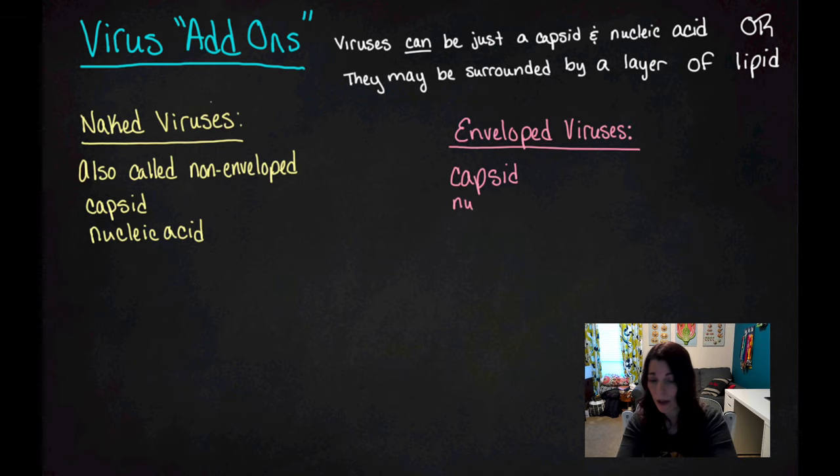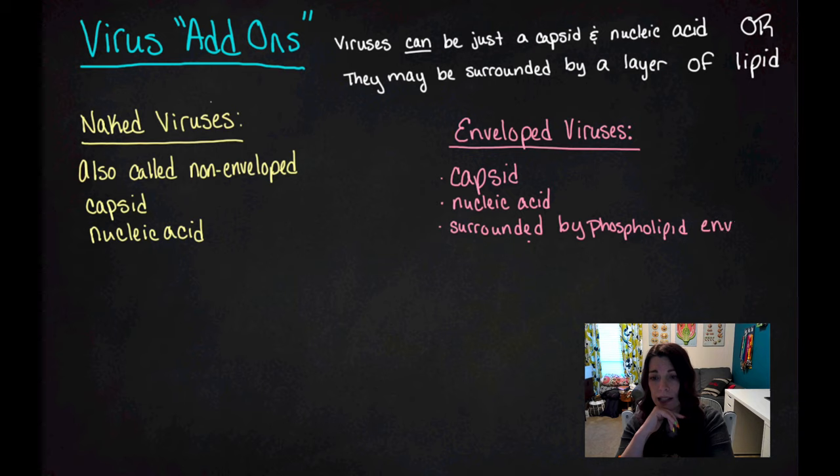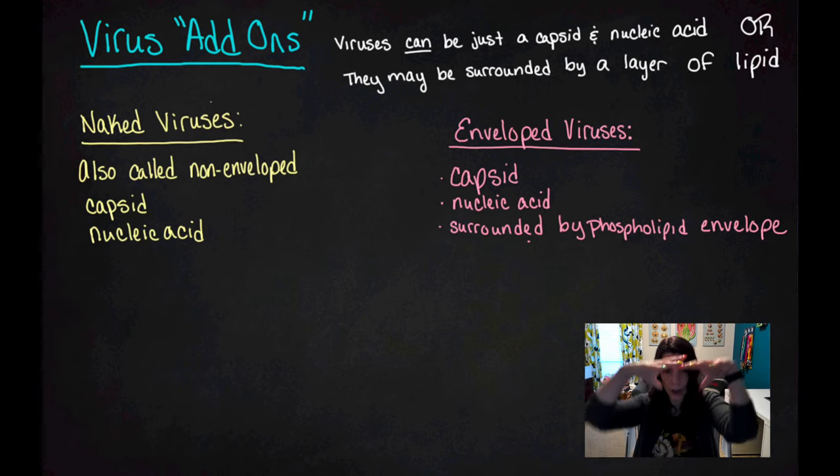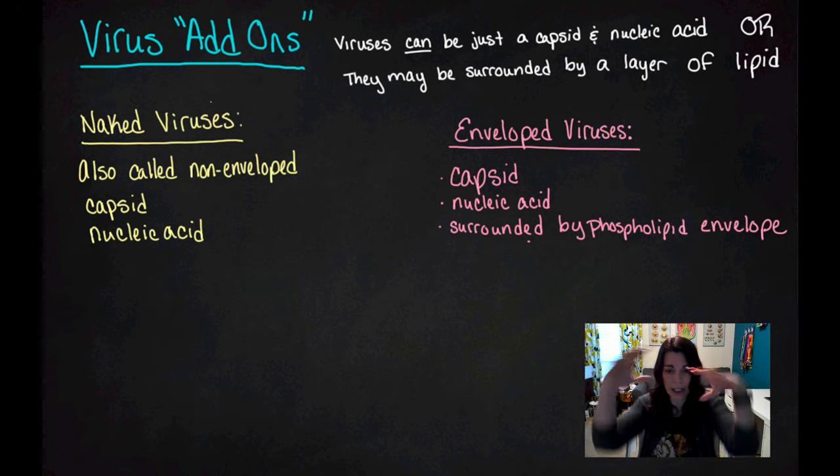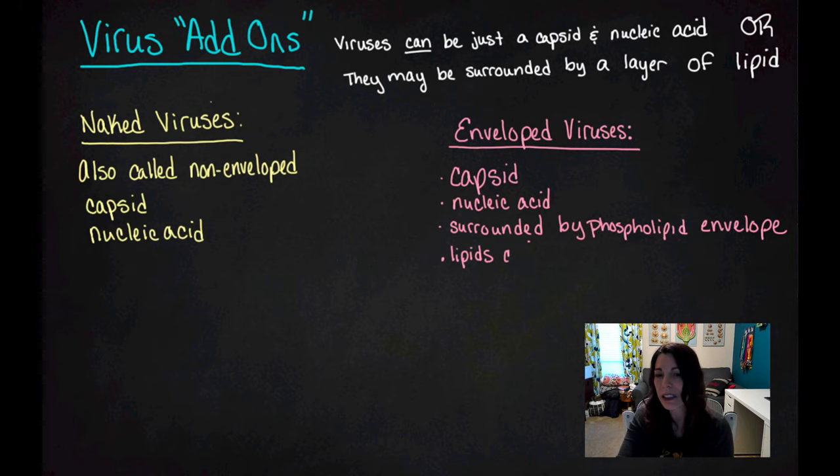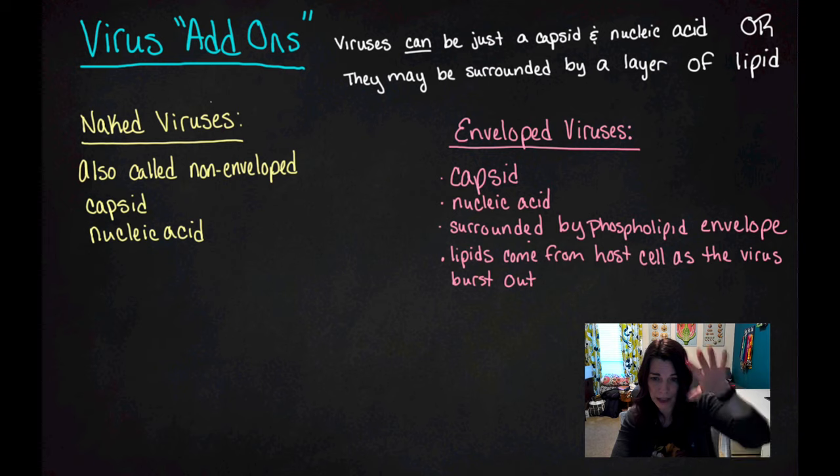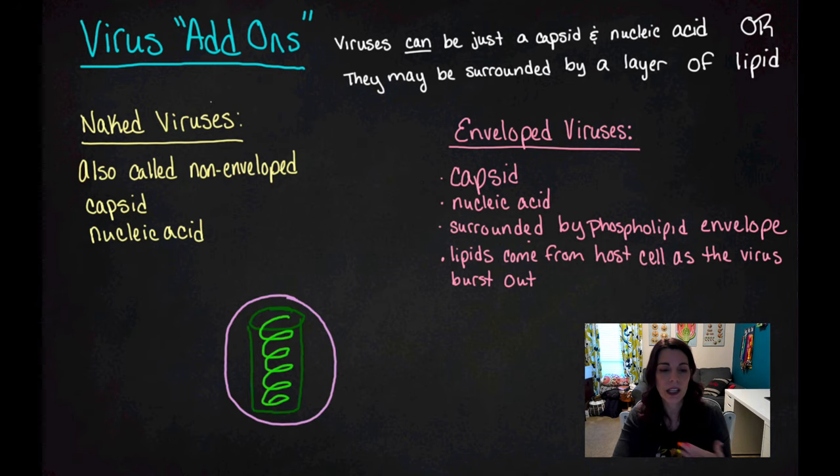An enveloped virus is going to contain a capsid, a nucleic acid, and it's going to be surrounded by a phospholipid envelope. An envelope is just literally something that surrounds it. Think of it as the coating on the outside. But it's a little bit more violent than that because the lipids, the phospholipids that are surrounding it, actually come from whatever host cell that the virus just burst out of.